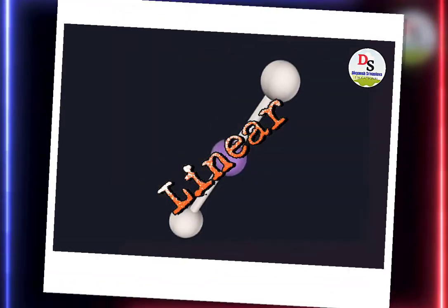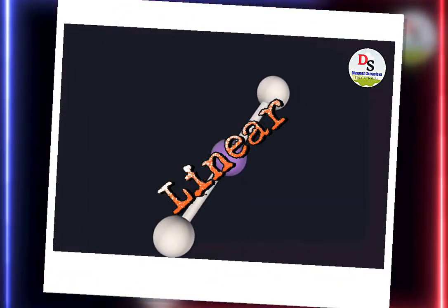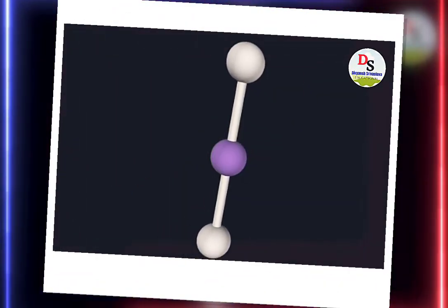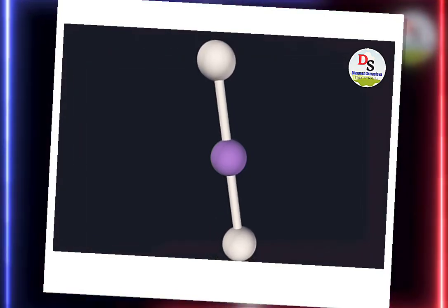It is the linear structure of a molecule. It has two bond pairs and zero lone pairs.